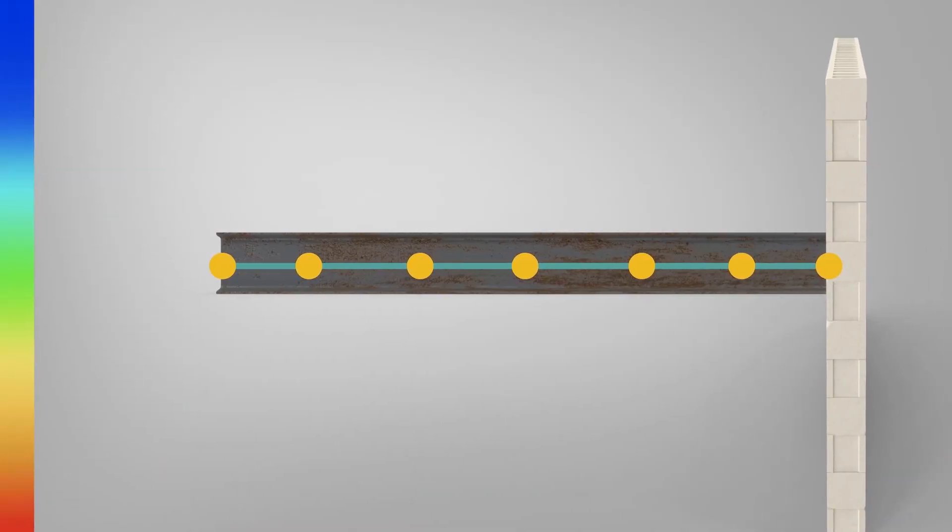Now, let's stop here for a second to name things. We can call all those little beam divisions elements. And at the end of each element, there are points that we can call nodes.